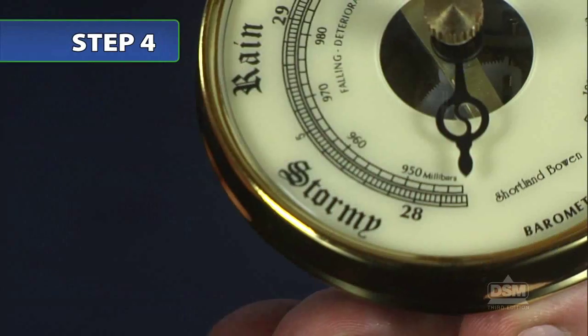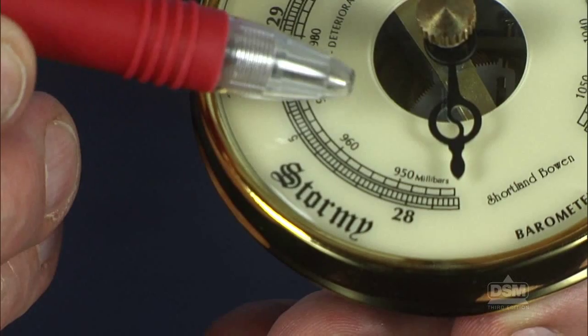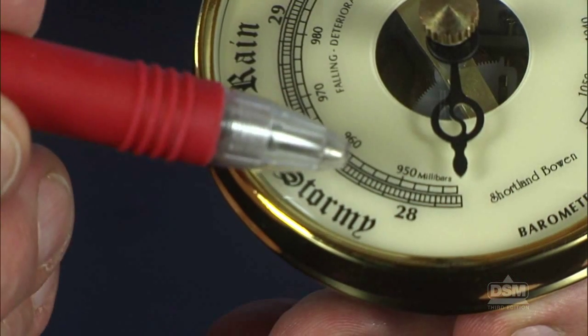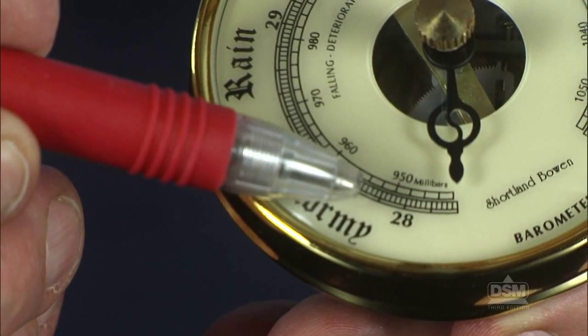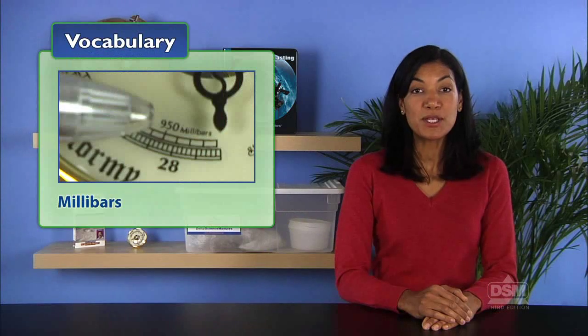Bring the students' attention to the two scales on the face of the barometer. Even though this kind of barometer contains no mercury, the air pressure is often still measured in inches of mercury. Point out the outside scale that indicates inches of mercury and the inside scale that indicates the metric equivalent of inches of mercury, millibars.